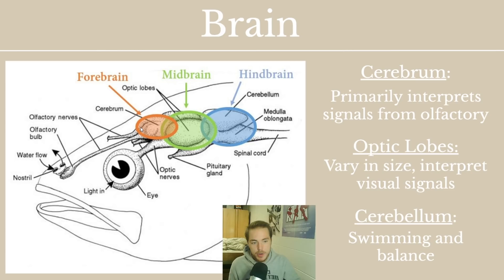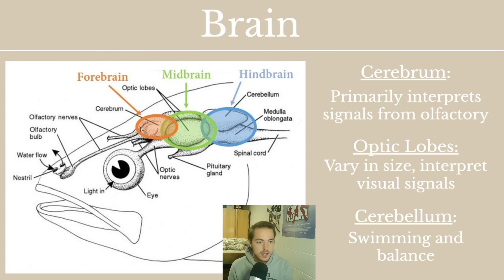Next, in the midbrain, you have the optic lobes, which should be fairly self-explanatory. They can vary in size depending on how much the fish relies on sight. In fish living in murky water, you'd expect smaller optic lobes because they're not relying much on sight — they rely more on taste. So a catfish, which smells things in the water rather than seeing them, would be expected to have a larger forebrain and a smaller midbrain.